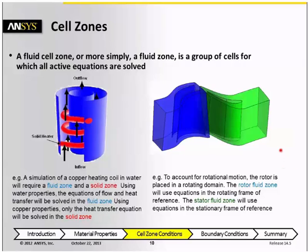On the right, there's an example of a rotating machinery problem, where to account for rotational motion, there's a rotor zone and a stator fluid zone.